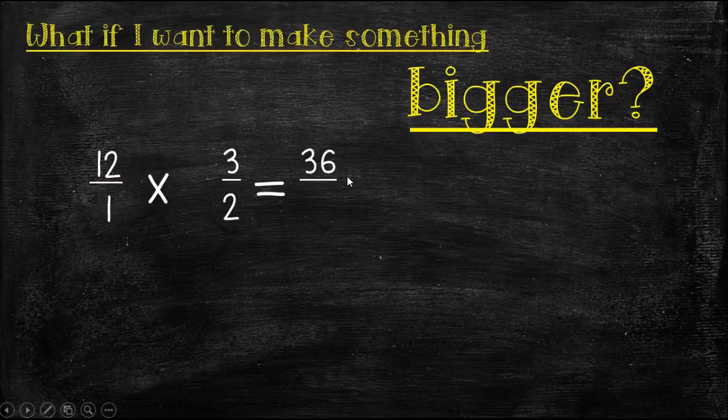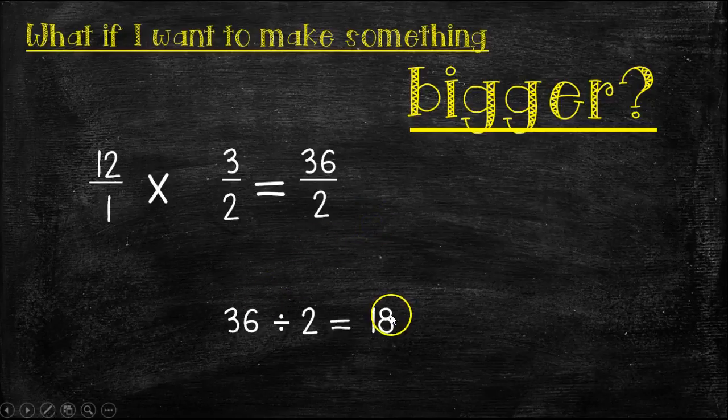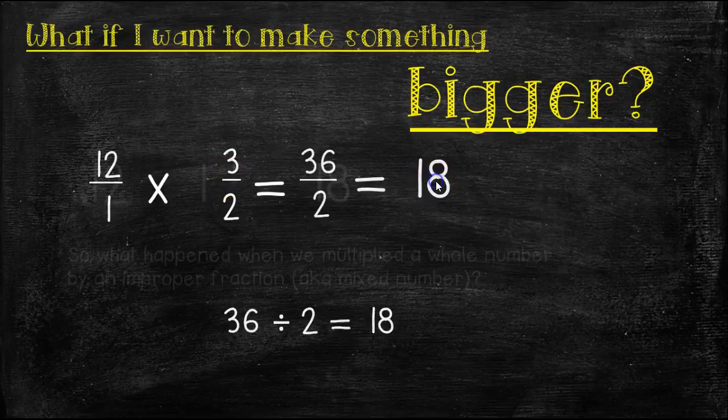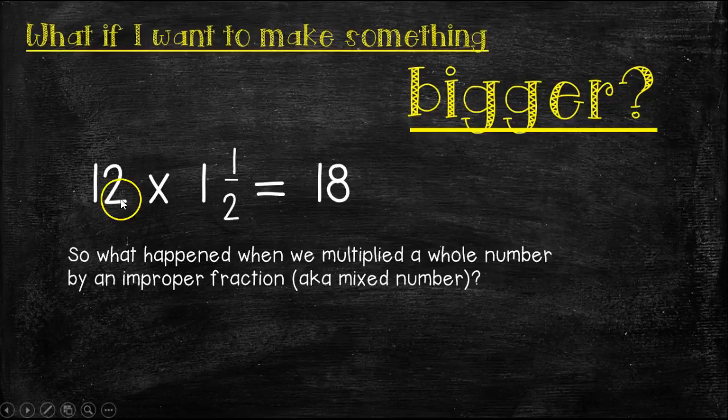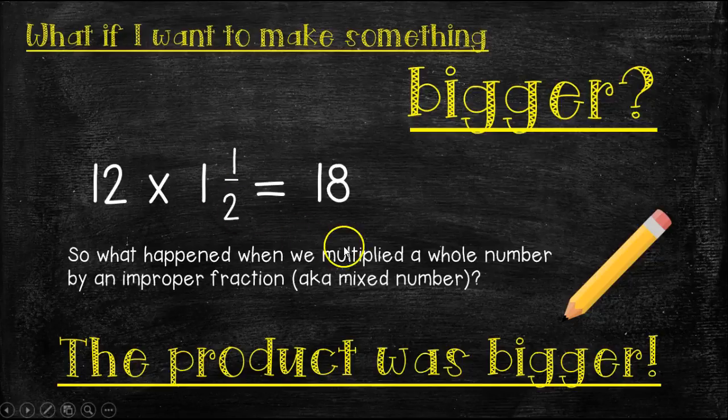So, then we know we have to divide 36 divided by 2 to get our answer, and our answer is 18. So, look at this. When you multiply a whole number by a mixed number or an improper fraction, something bigger than 1, what happens to the product? What happened when we multiplied a whole number by an improper fraction or a mixed number? The product was bigger. Go ahead and pause the video and write that down. When you multiply a whole number by an improper fraction or a mixed number, then the product gets bigger.